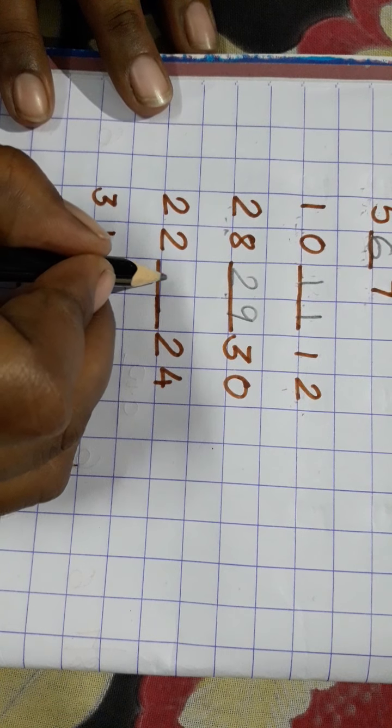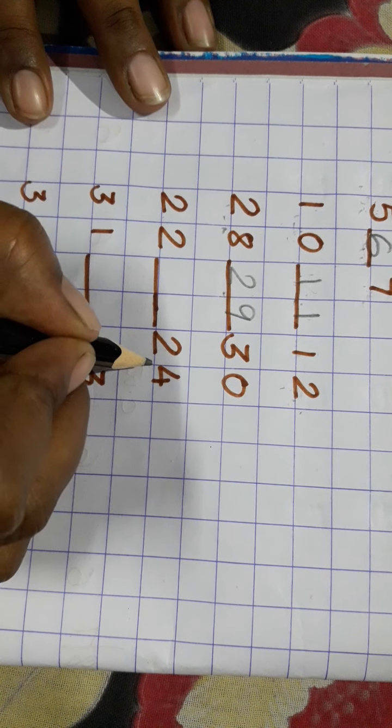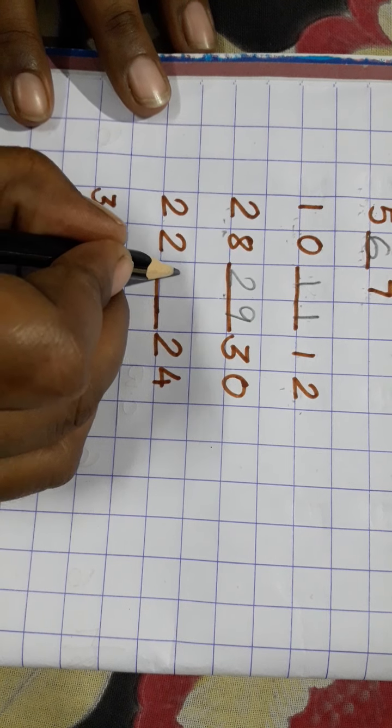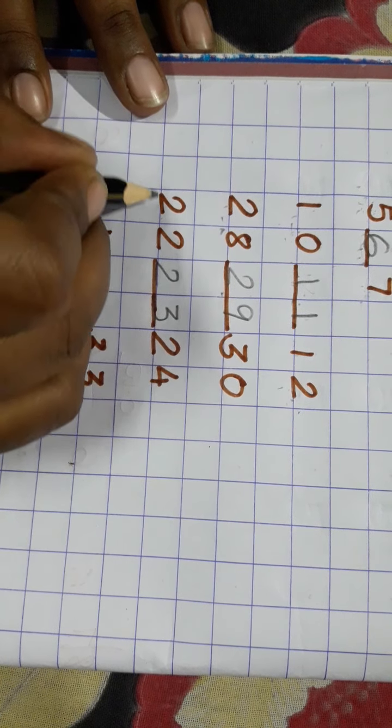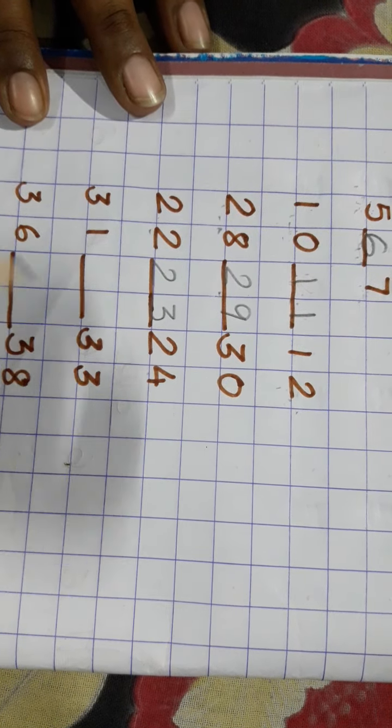What comes after 22? 23. What comes before 24? 23. 22, 23, 24.